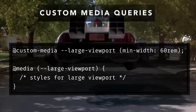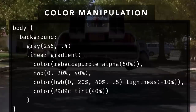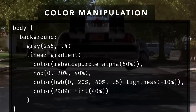I heard that on Twitter yesterday. And we will have a lot of color manipulation possible, mainly with the new color function, which allows you to modify colors using modifiers like lightness, alpha, tint, saturation, whiteness, blackness — there are too many for me to list them all.